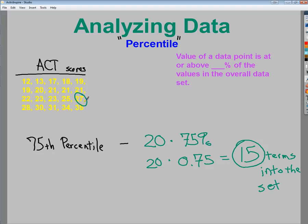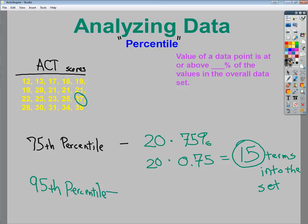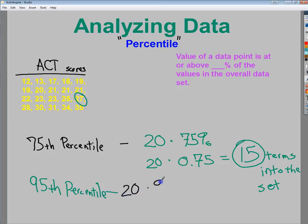If I wanted to get way up there, like I wanted to overachieve a lot, maybe I want to get in the 95th percentile. In that case, I would take the same number and multiply by 95%, which would be 20 times 0.95. And I would find out that that would be the 19th term in the set.